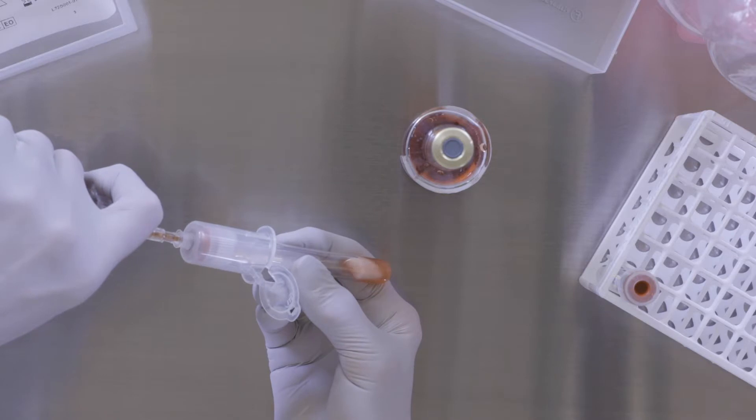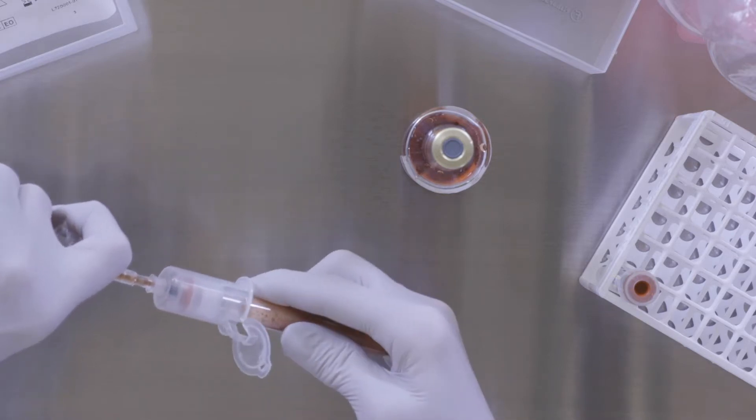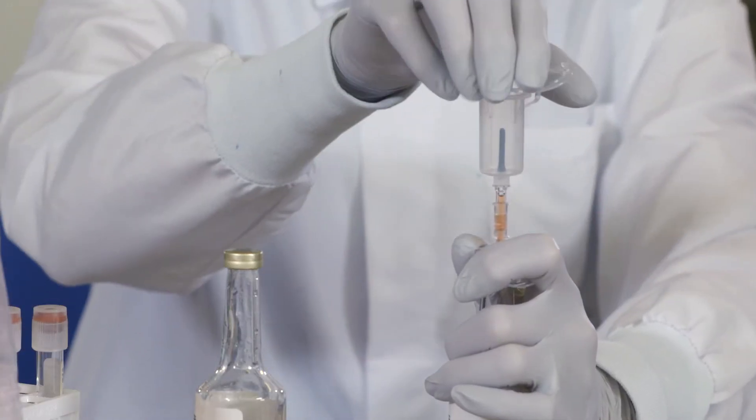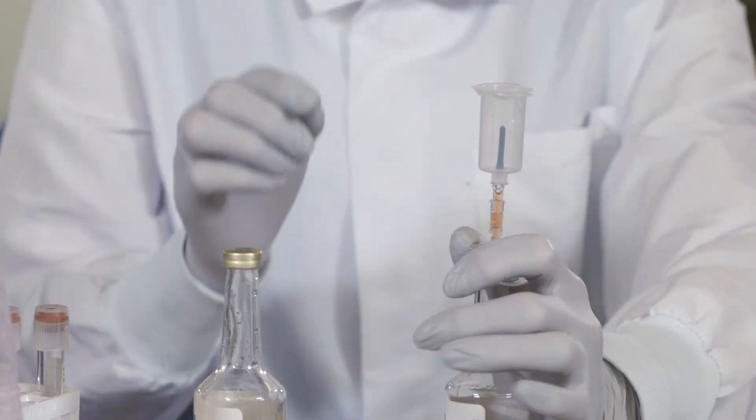When the sample transfer from the culture bottle into the vacuum tube is complete, remove the vacuum tube from the transfer capset. Now, turn the culture bottle to the upright position and close the safety lid on the tube holder.